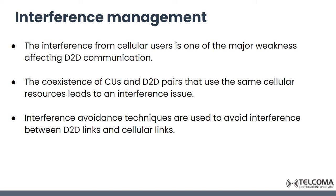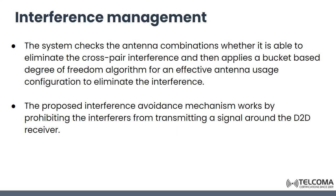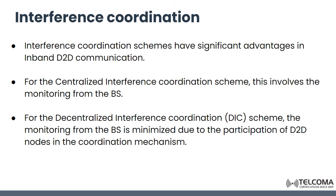Interference management is also a major weakness affecting device to device communication. The co-existence of cellular units and D2D pairs that use the same resources leads to interference issues. Interference avoidance techniques are used to avoid interference between D2D links and cellular links. The system checks antenna combinations to determine whether it can eliminate cross-interference, then applies a bucket-based degree of freedom. The proposed interference avoidance mechanism works by prohibiting interference from transmitting a signal around the D2D receiver. These coordination schemes have significant advantages in in-band D2D communication.